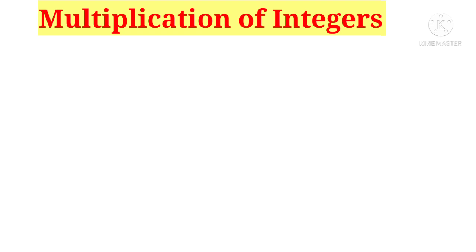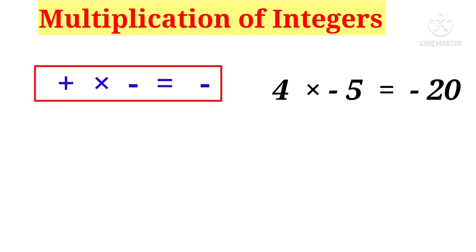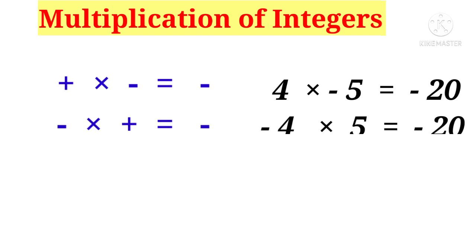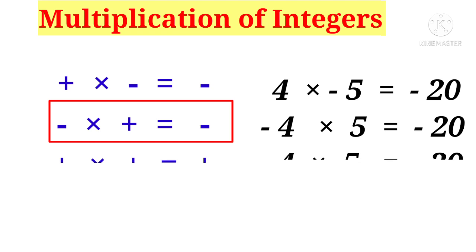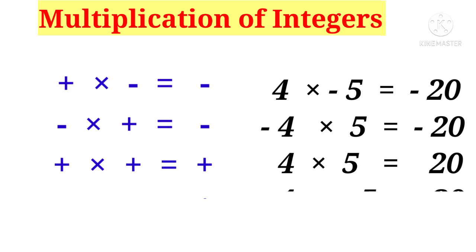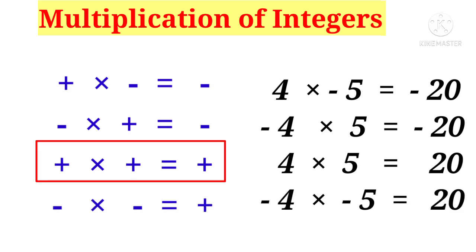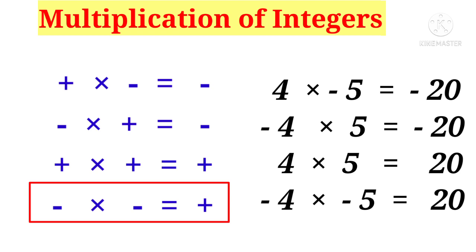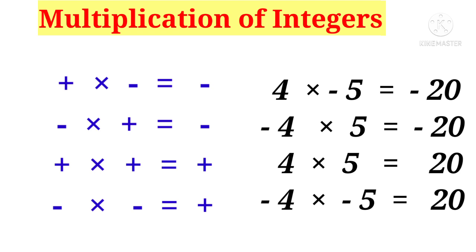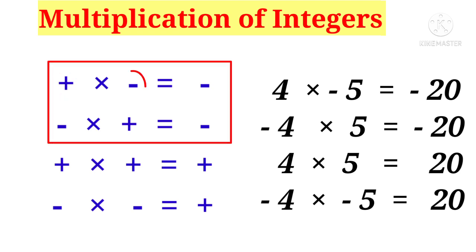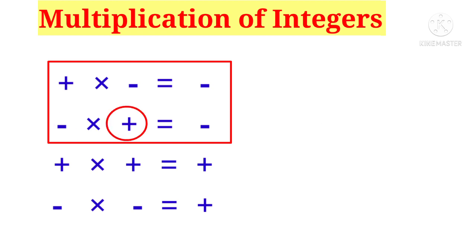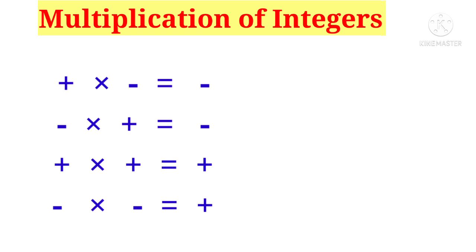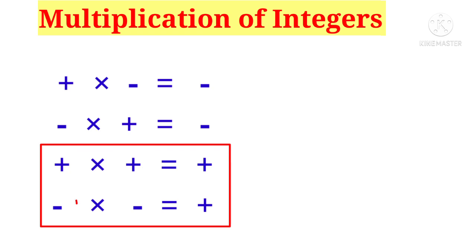Now let us observe the multiplication of integers. The rules are: plus into minus equals minus — for example, 4 into minus 5 gives minus 20. Minus into plus equals minus — minus 4 into 5 gives minus 20. Plus into plus is plus — 4 into 5 gives 20. Minus into minus is plus — minus 4 into minus 5 gives positive 20. To get a negative product, multiply a positive and a negative integer; to get a positive product, both integers must be the same sign.